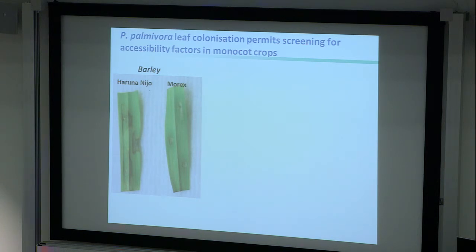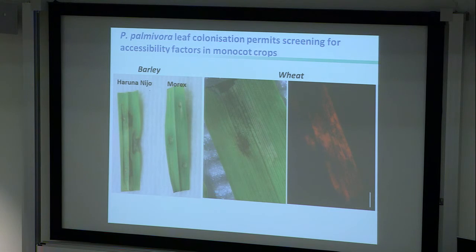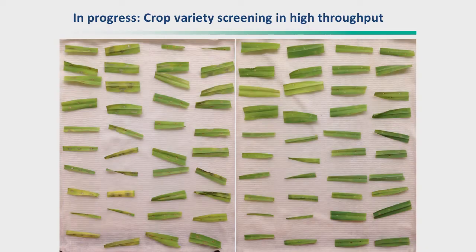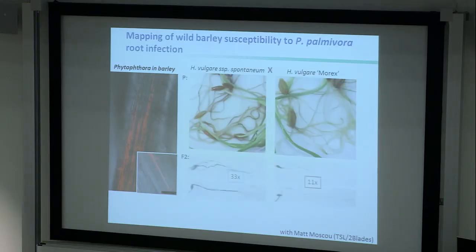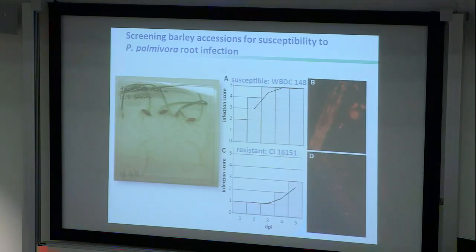Our assay with Phytophthora palmivora shows two barley accessions — one susceptible, the other rather resistant — and it even colonizes wheat. Because we have a red fluorescence strain, we can follow infection well ahead of visible disease symptoms. This allows us to identify general principles of accommodation through a high-throughput screen, limited only by the availability of barley and wheat varieties and mutants. We've already identified differential phenotypes, carried out mapping, and found a dominant susceptibility gene which we're currently characterizing in roots.